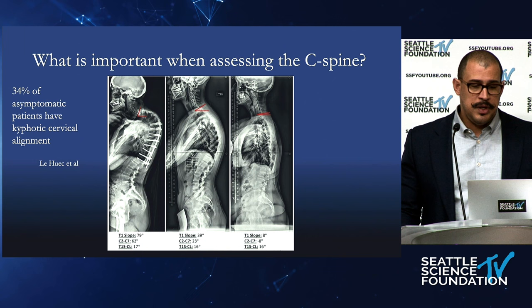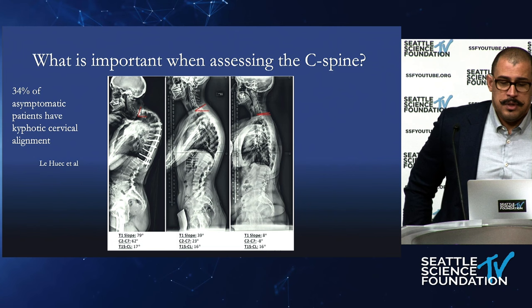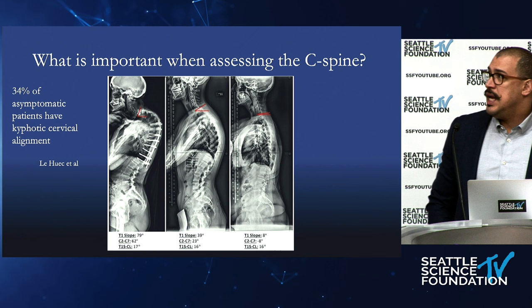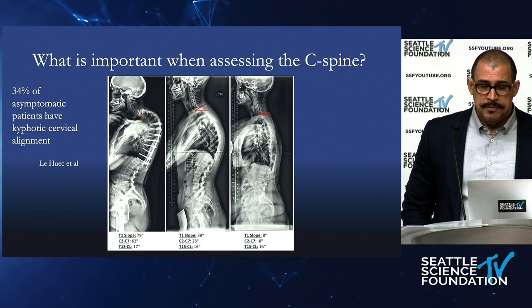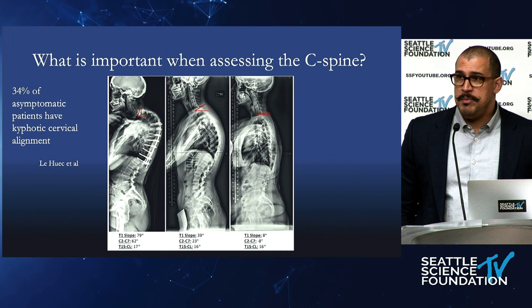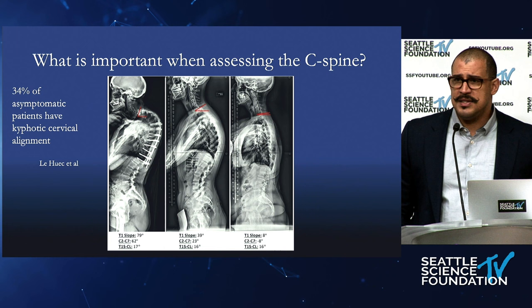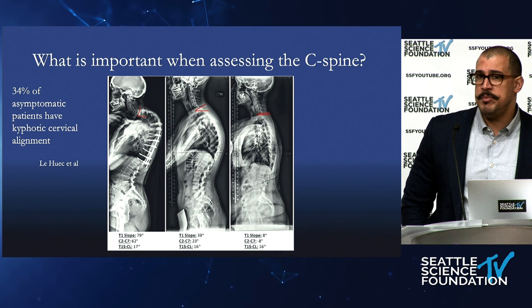When looking at T1 slope versus cervical lordosis, you want those things to generally match to give good balance to overall alignment. Here are three examples of 16 or 17 degrees of cervical lordosis minus T1 slope that are equivalent — some coming from a thoracic deformity, obviously more symptomatic, a more neutral spine, and one with very little curvature that may be kyphotic but has a very low T1 slope, so that kyphosis may be appropriate. A study of totally asymptomatic people found 34% had cervical kyphosis, probably due to rest of spinal alignment and ability to compensate.